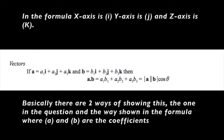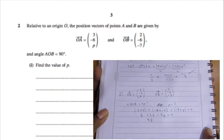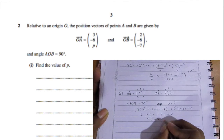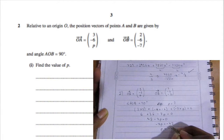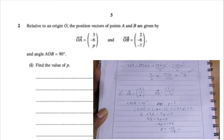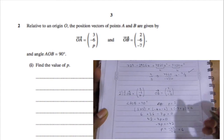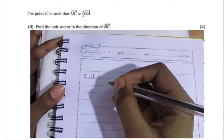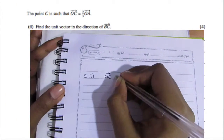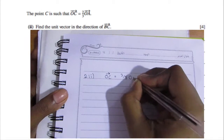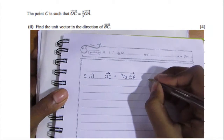Since the angle is 90 degrees, we use the dot product formula. Multiply corresponding components and add: 3×2 + (−6)×(−6) + (p)×(−7) = 6 + 36 − 7p, and set this equal to zero, because cos(90°) = 0. Solving gives p = 6.